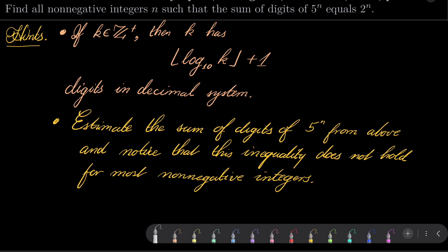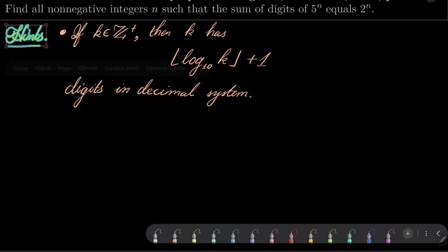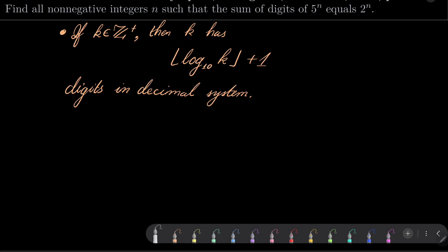We'll give this problem a try. So I will use this fact. And now let's see. 2 to the power of n should be equal the sum of digits of 5 to the power of n.